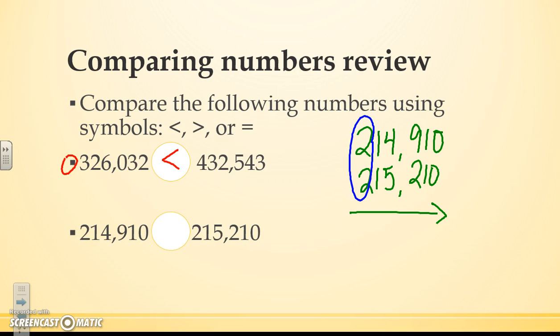I see that my first numbers are the same. 200,000 and 200,000 are the same, so I need to go next door. I see that 10,000 and 10,000 are the same, so I need to go next door. Now I see these numbers are different. 5 is bigger than 4, so this number is greater. So 214,910 is less than 215,210.